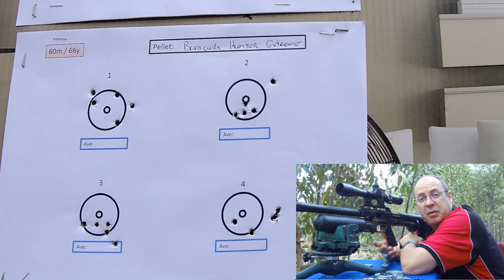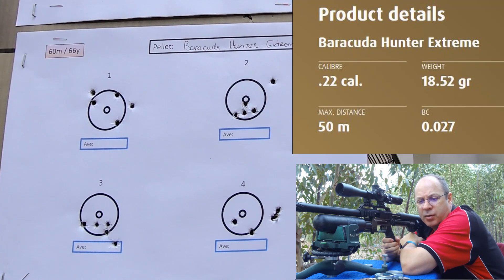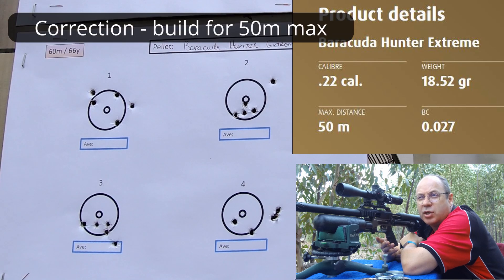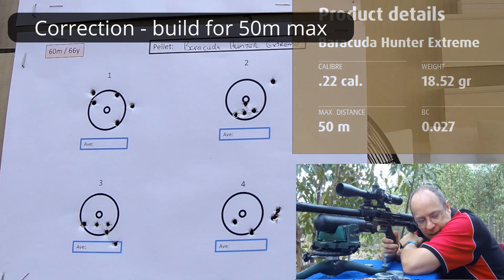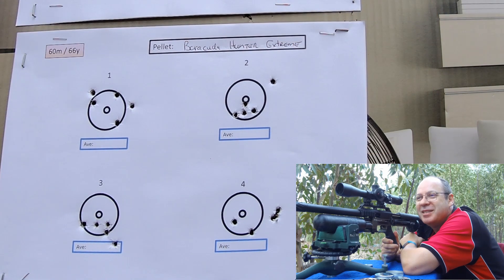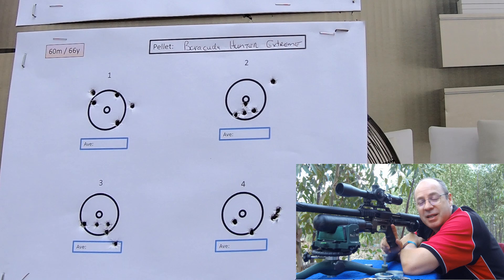Okay, I actually feared the worst when I loaded the Barracuda Hunter Extremes, again a pellet that's actually built for 30 meters, 30-40 meters. I'm pushing them up to 60. I'm pushing them up to 60 meters on different power settings, and they actually performed quite well. I'm pleasantly surprised.